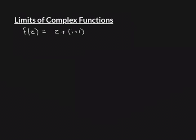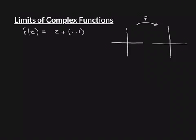Let's just draw a picture. We'll draw, as always, a picture for our domain and a picture for our codomain, and the mapping f is going to be a mapping from one to the other. Think about what this function is actually going to do. The complex number i plus 1 is 1 plus i — it's the point 1 to the right and 1 upwards, and I'll mark that on in red.